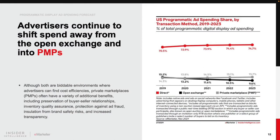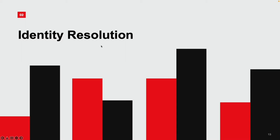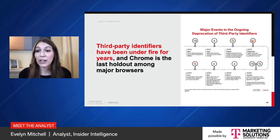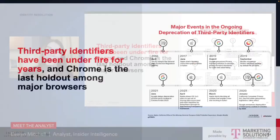In PMPs, buyers and sellers can more easily work together to achieve desirable outcomes, which is especially important as consumer data diminishes. That's a good segue into our next topic, identity resolution. The third-party identifiers upon which programmatic advertising was built have been under fire for years. Here we have a timeline of major milestones in their slow demise. Chrome is really the last holdout among major browsers to maintain infrastructure support for third-party cookies.